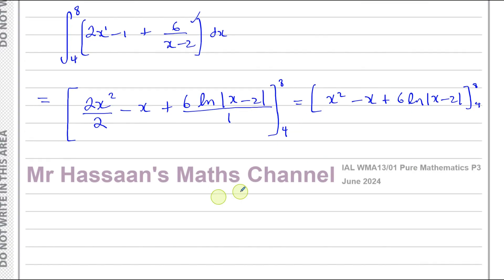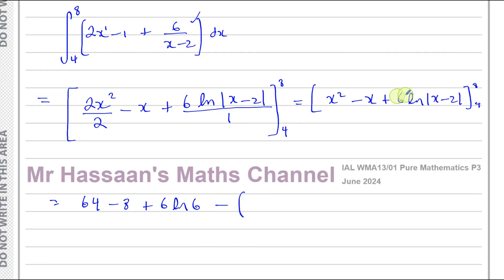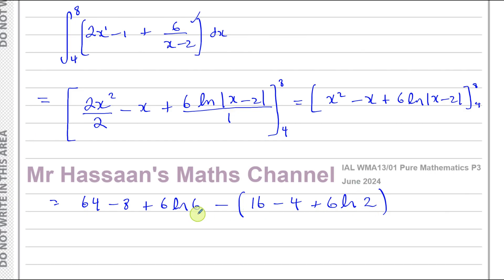Now we substitute the values 8 and 4. Putting 8 in: you get 64 minus 8 plus 6 times ln(8 minus 2), which is ln 6. Keep a bracket around the lower-limit substitution to protect from the minus sign. Putting 4 in: 4 squared is 16, minus 4, plus 6 times ln(4 minus 2), which is ln 2. Since both inputs 6 and 2 are positive, we no longer need the modulus sign — we can write ln 6 and ln 2 directly.